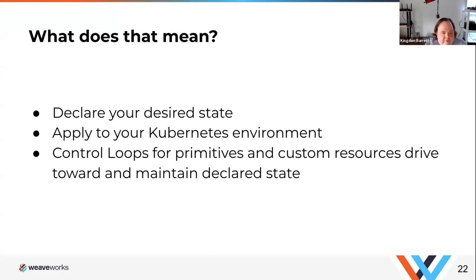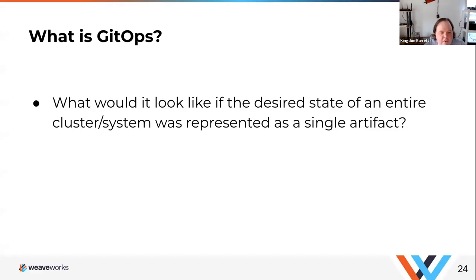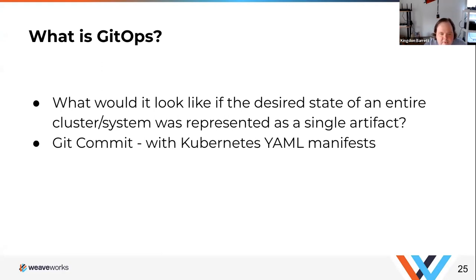When you're creating these resources and applying them to your Kubernetes environment, and the control loops are operating, you need a way to actually manage that reasonably. That transitions us straight to GitOps. To describe GitOps, let's start with: what would it look like if the desired state of the entire cluster was represented as a single artifact — call that artifact a Git commit. Inside the Git commit, you put your Kubernetes YAML manifests — jobs, deployments, config maps — and then allow a GitOps operator like Flux to deploy them to the cluster.